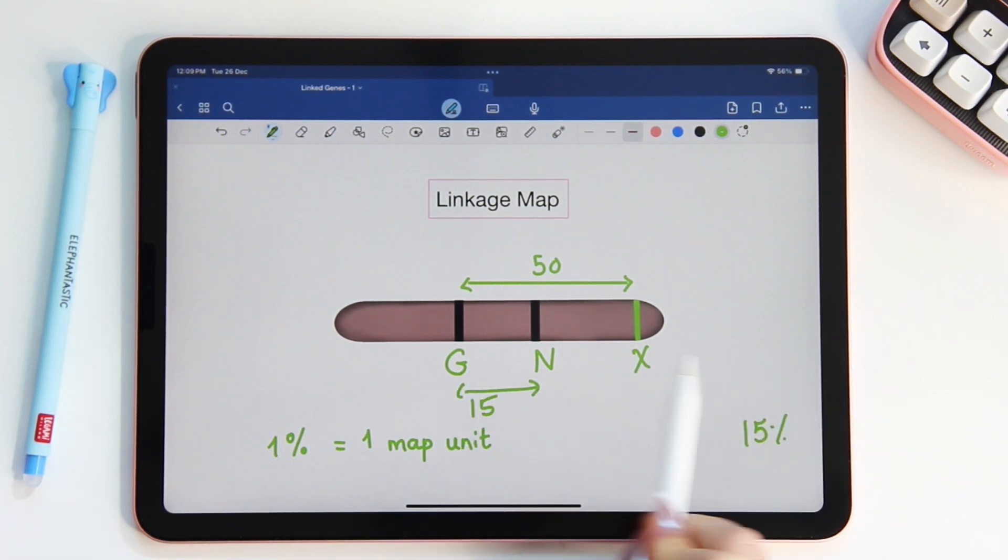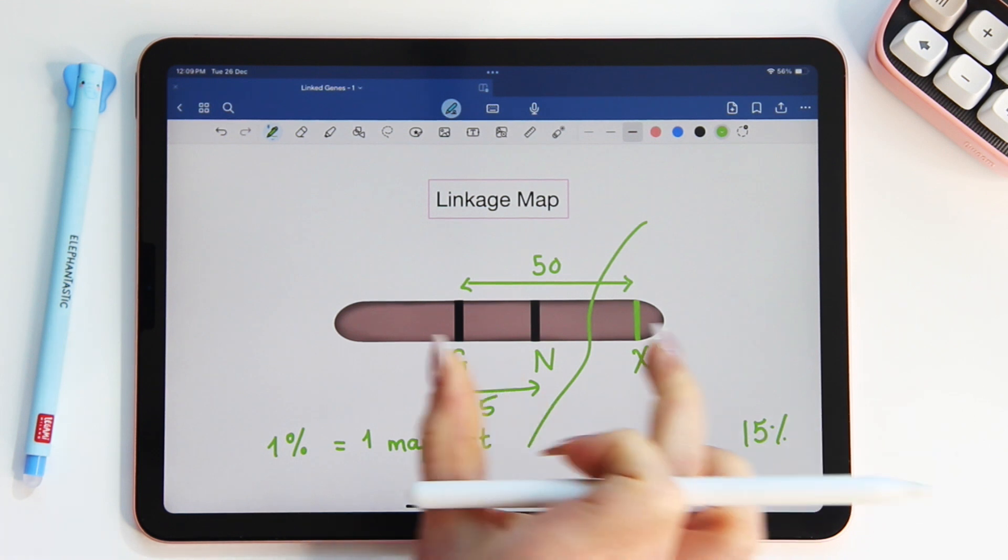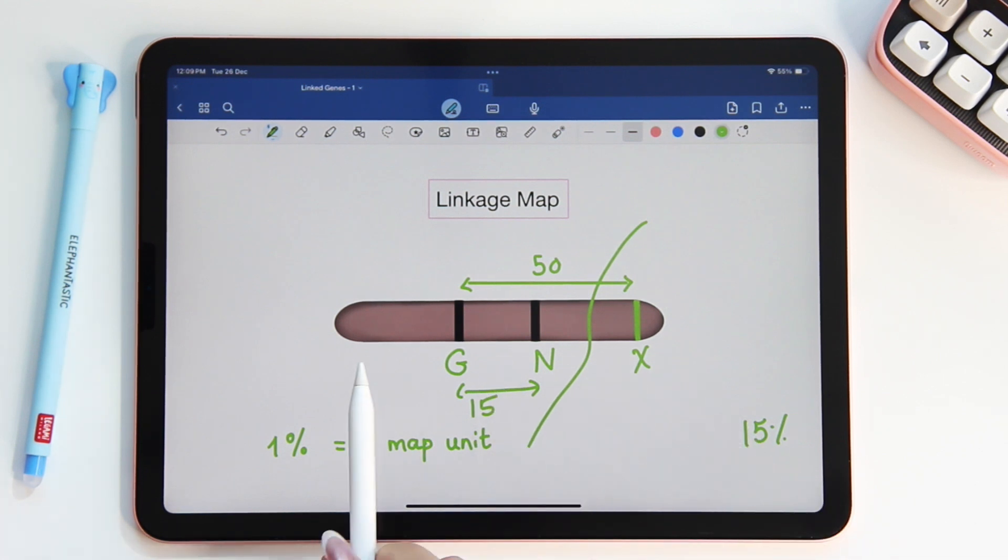These two genes are so far apart that at least one crossing over can take place between them. So you see how 50 map units, which means 50% frequency, acts as a cutoff frequency that gives us an idea whether the two genes are linked or not.